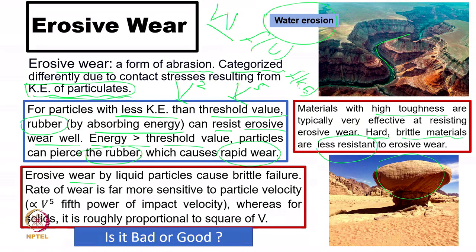Erosive wear by liquid particles causes brittle failure, and this is why the water jet cutting machine is well known — it can cut brittle materials and produce good machined products. The rate of wear with liquid is far more sensitive, proportional to V to the power of 5, compared to V-squared for solid particle erosion. Fluid erosion is therefore much more sensitive and damaging than solid particle erosion.